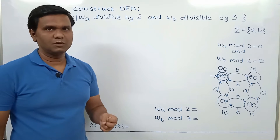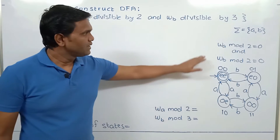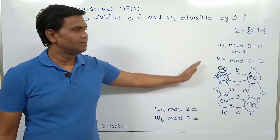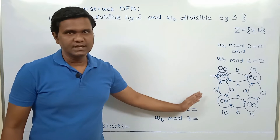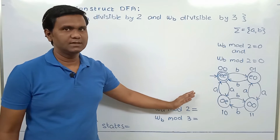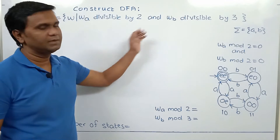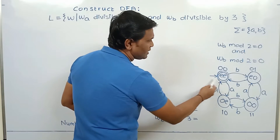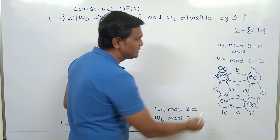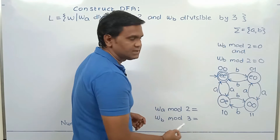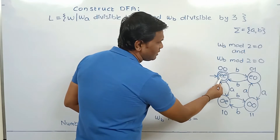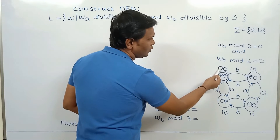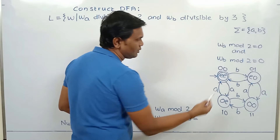When we studied the cross product of the DFA, we designed a DFA for number of A's divisible by 2 and number of B's divisible by 2. We are going to extend the same logic for this problem statement. If processing of a string ends in the starting state, it means number of A's are even and number of B's are even — that is, number of A mod 2 is 0 and number of B mod 2 is 0.